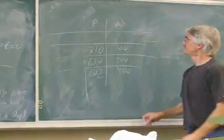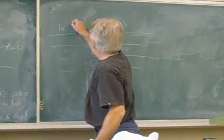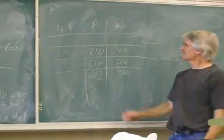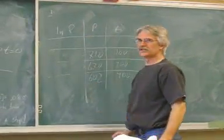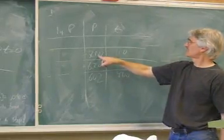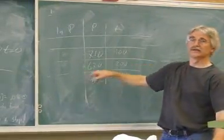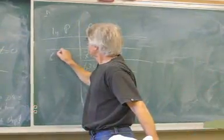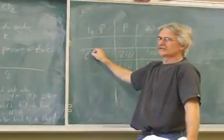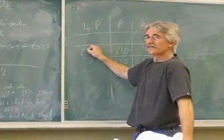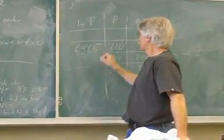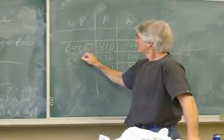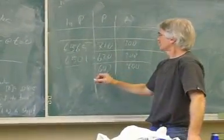So maybe it's first order. So we can take the natural log of P, pressure. Can someone take the natural log of 710? Six point five six five. The next one, log of natural log of 670. Six point five zero one. And log of 602.